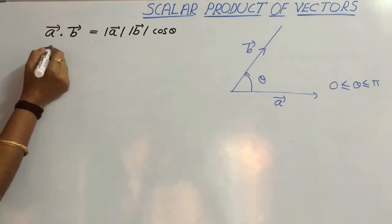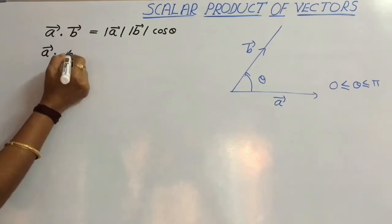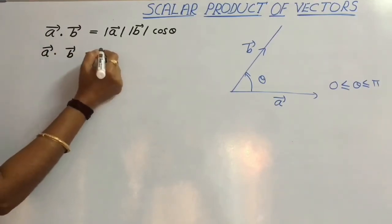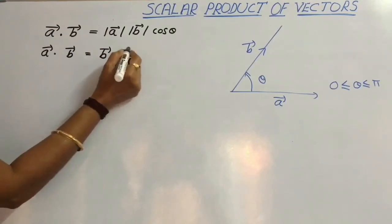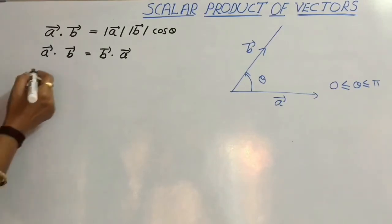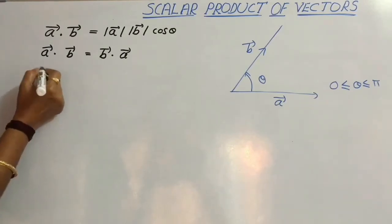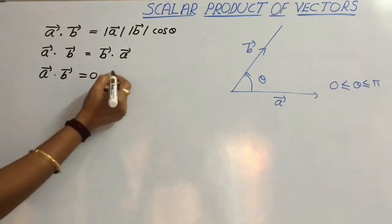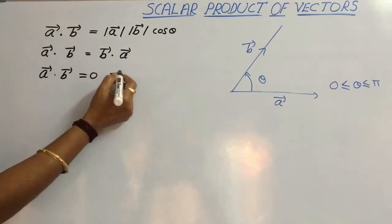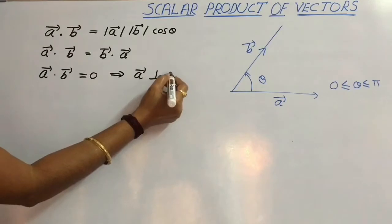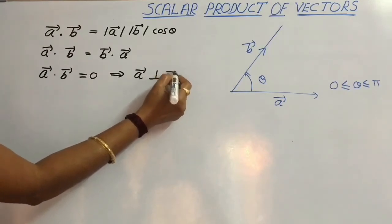We also know that vector A dot vector B is equal to vector B dot vector A. That means scalar product is commutative. Suppose vector A dot vector B equals 0 — this means vector A is perpendicular to vector B.